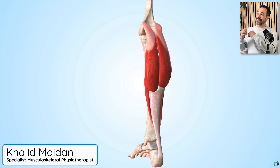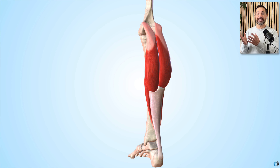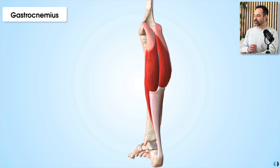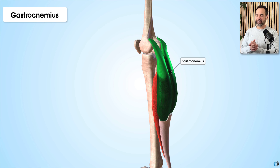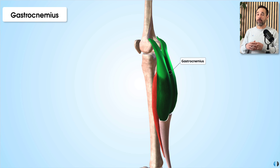Let's start with our 3D anatomy model and look at some of the key anatomical differences between these two muscles, starting with the gastrocnemius. The gastrocnemius is the more superficial of the two muscles, meaning that it's closer to the skin, and it has a distinctive bulging appearance — it's what most people generally recognize as the calf muscle.